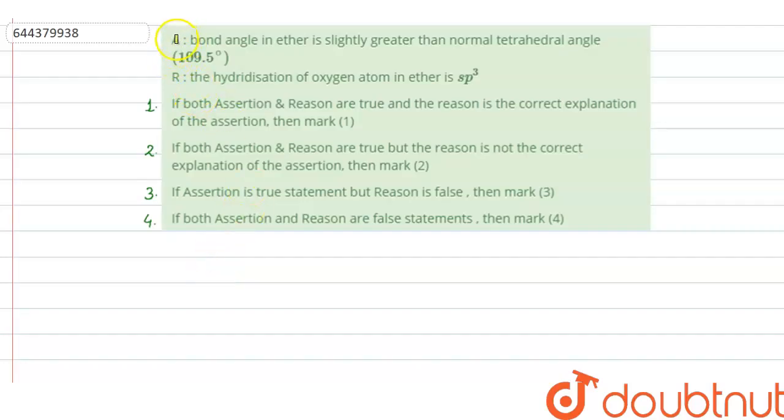The question says that assertion: bond angle in ether is slightly greater than normal tetrahedral angle 109.5 degree. And reason is: the hybridization of oxygen atom in ether is sp3.